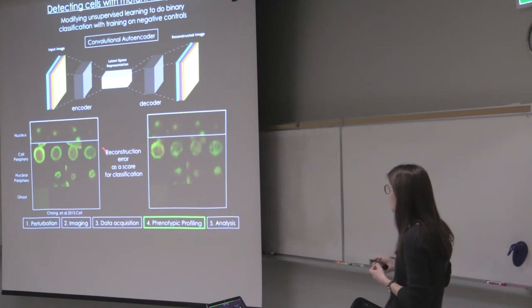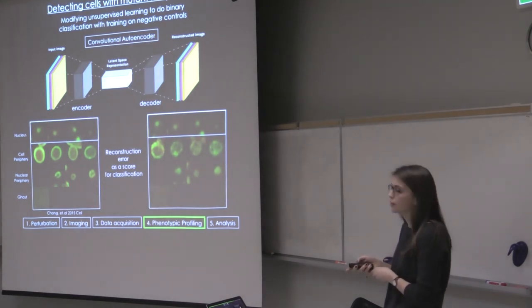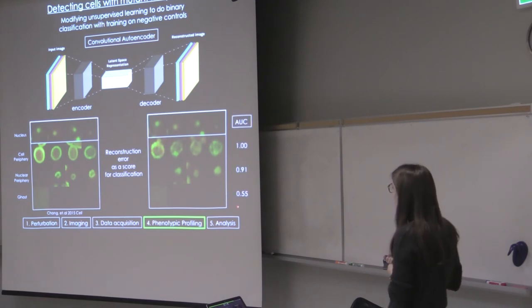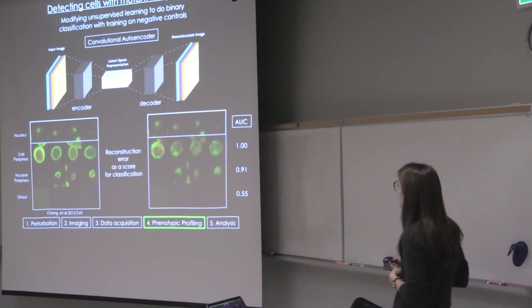And we've tested on this in a slightly different yeast image dataset. So instead of looking at the mutant phenotypes because we didn't have the data before, we looked at our protein localization dataset. And if we train this autoencoder on just looking at the nucleus, we wanted to ask how well can we classify these other classes that are not nucleus by looking at reconstruction error as a score for classification. And we can achieve really high accuracies with these.